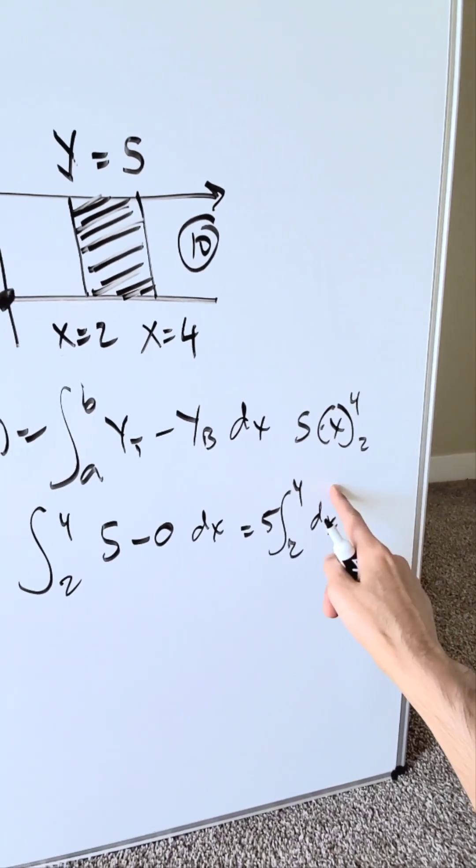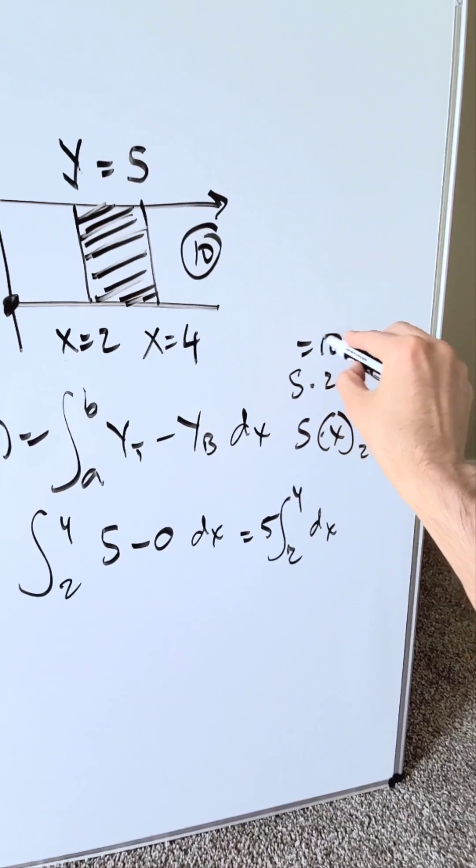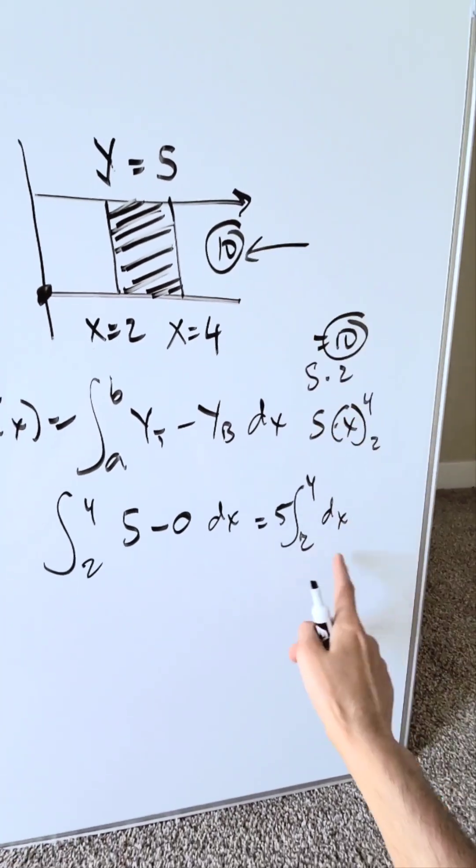Upper limit, lower limit, the difference of 2. 4 minus 2 is a 2, 5 times 2, it'll give you that 10. As you see right here, it's done using the dx.